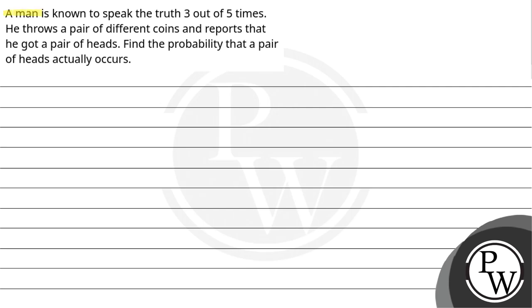Hello, let's read the question. A man is known to speak the truth three out of five times. He throws a pair of different coins and reports that he got a pair of heads. Find the probability that a pair of heads actually occurs.